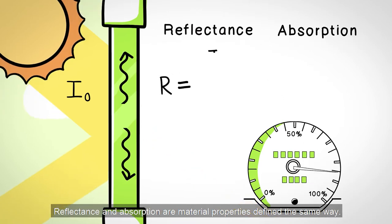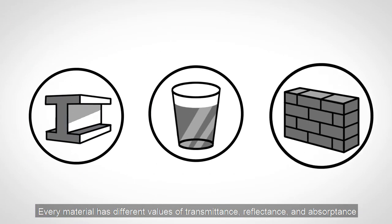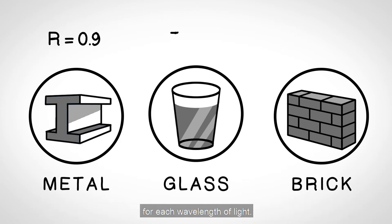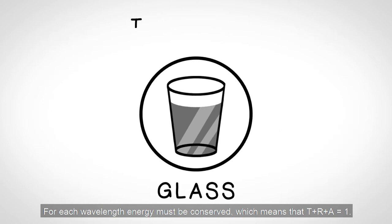Reflectance and absorptance are material properties defined the same way. Every material has different values of transmittance, reflectance, and absorptance for each wavelength of light. For each wavelength, energy must be conserved, which means that T plus R plus A equals 1.